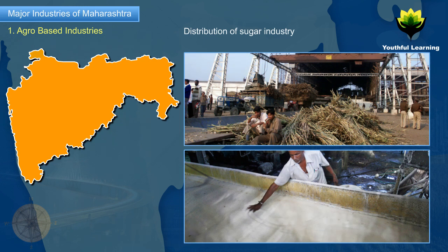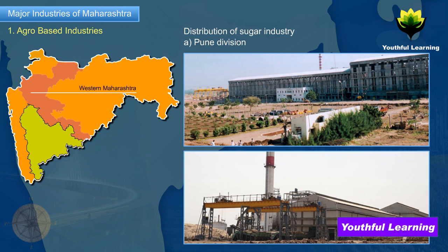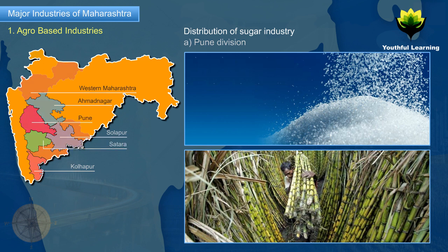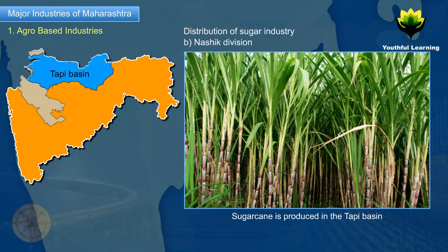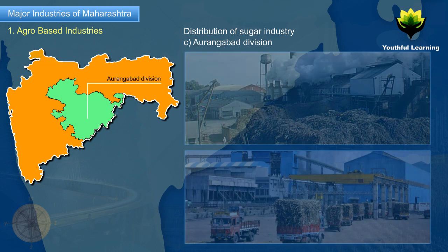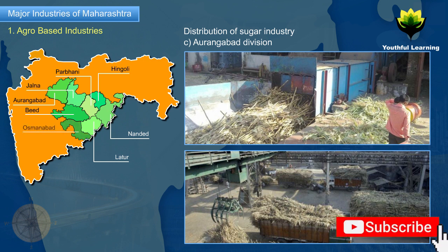Distribution of sugar industry — Pune Division: The majority of sugar factories are located in western Maharashtra. The highest sugar-producing districts are Ahmednagar, Kolhapur, Solapur, Pune, and Satara. Nashik Division: Sugarcane is produced in the Tapi basin. Marathwada Division: Sugar factories are found in Hingoli, Beed, Parbhani, Nanded, Jalna, and Osmanabad districts.